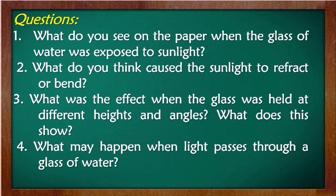After your activity, answer the following questions: Number one, what do you see on the paper when the glass of water is exposed to sunlight? Number two, what do you think caused the sunlight to refract or bend? Number three, what was the effect when the glass was held at different heights and angles — what does this show? Number four, what may happen when light passes through a glass of water? Observe carefully so that you can write your own answers.